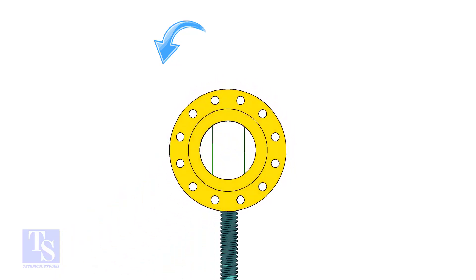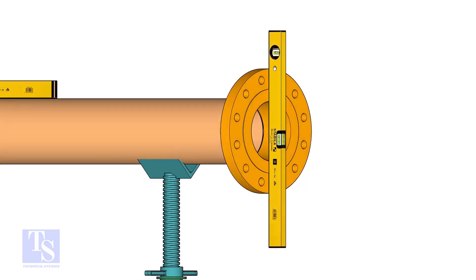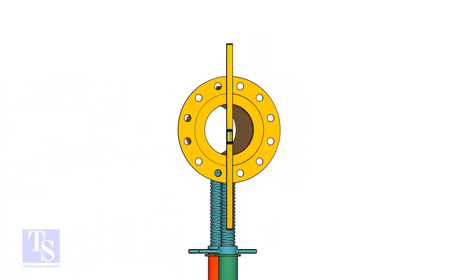Rotate the pipe and flange 90 degrees to either side. Check the vertical level of the flange. If correct, tack weld on the top side of the joint.